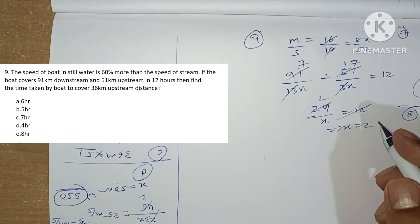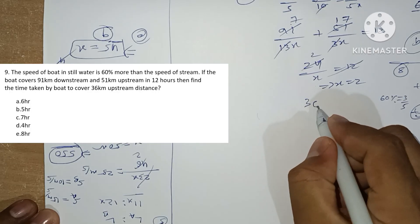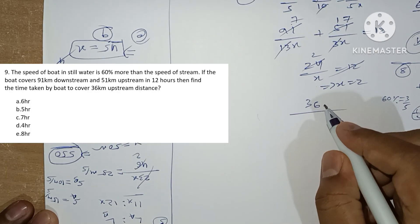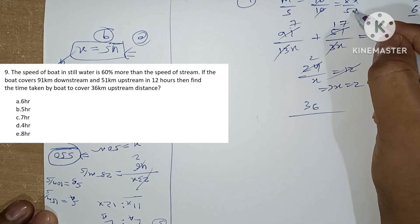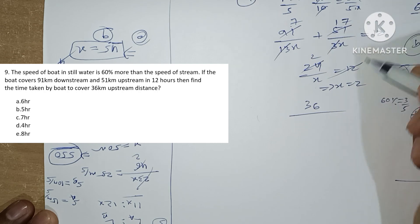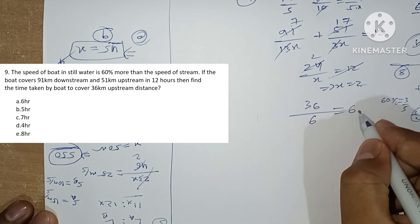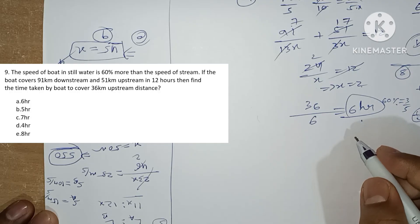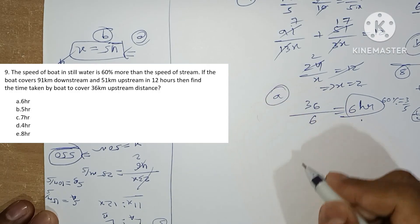The question asks for the time taken by the boat to cover 36 km upstream. Upstream speed is m minus s, which is 3x = 3 × 2 = 6 km/h... giving 36/6 = 6 hours. Option A is our answer.